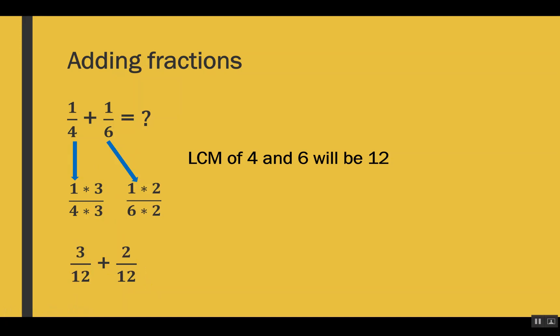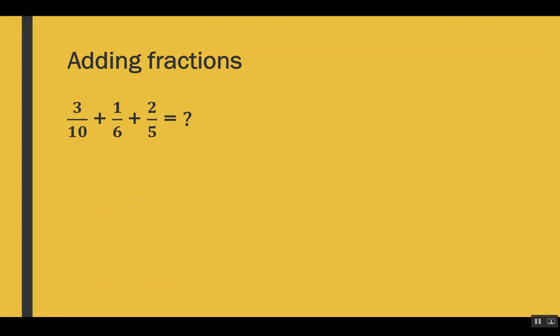Our denominators are now the same, so adding is super easy. We just add the numerators: 3 + 2 = 5, and we leave the denominator as it is because it is common. So we write 12. The addition of 1/4 and 1/6 gives us 5/12.